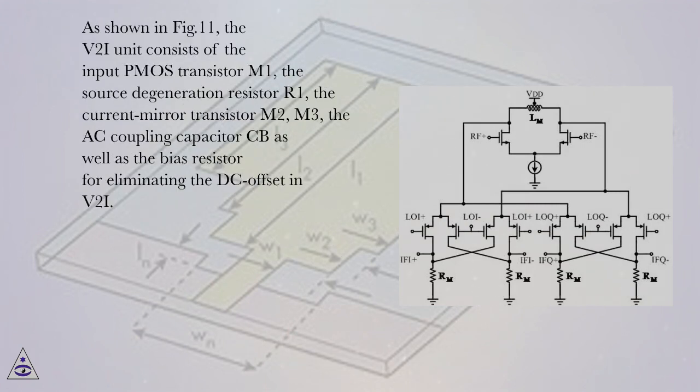As shown in FIG.11, the V2I unit consists of the input MOS transistor M1, the source degeneration resistor R1, the current mirror transistor M2, M3, the AC coupling capacitor CB as well as the bias resistor for eliminating the DC offset in V2I.